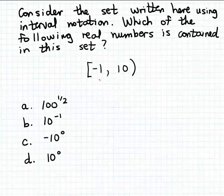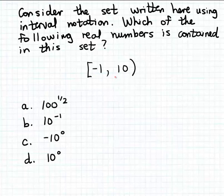Recall interval notation is a method for writing down certain subsets of the set of real numbers. In interval notation we write down two boundary values, and the interval set contains all of the real numbers between the two given boundary values. We also use square brackets and parentheses to indicate whether the boundary values themselves are part of the set.